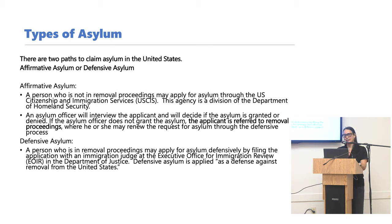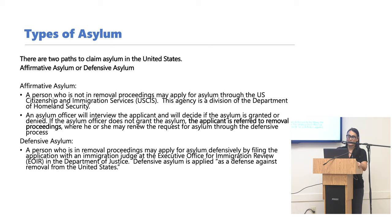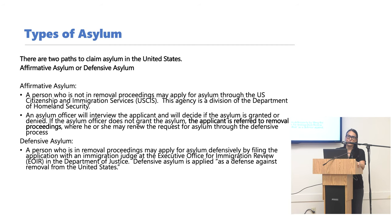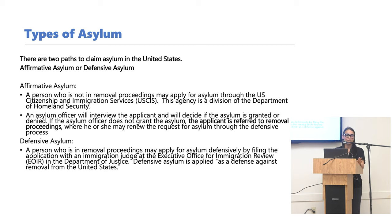Defensive asylum is for persons who are in removal proceedings. They may file for asylum defensively by filing an application with an immigration judge at the Executive Office for Immigrant Review (EOIR), which is under the Department of Justice. Defensive asylum is applied as a defense against removal from the United States. For example, if you are at a border and say you are going to apply for asylum, you are referred to immigration court where your asylum claim can be filed. This must also be done within one year.